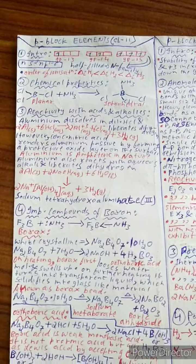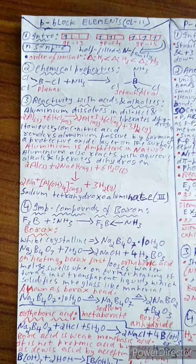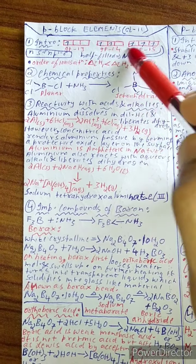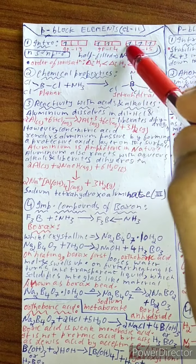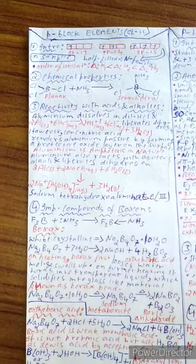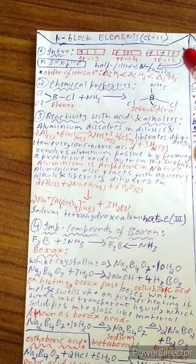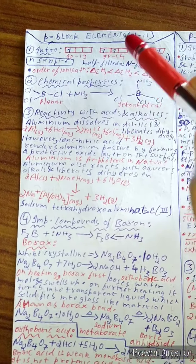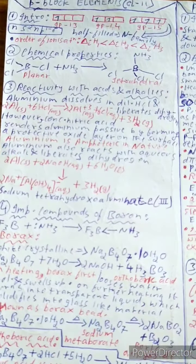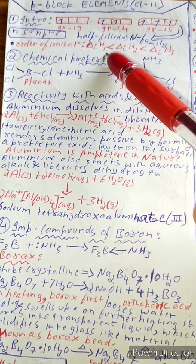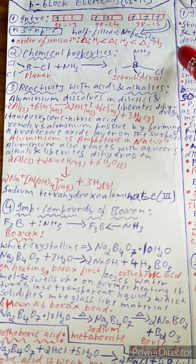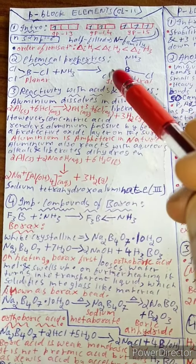Talking about Class 11 P-Block first — the introduction part. This is the configuration of Group 13, 14 and 15. The box-shaped structures represent that in the nitrogen family all of them are half-filled, and the configuration is ns² np³. The order of ionization is ΔH₁ < ΔH₂ < ΔH₃.